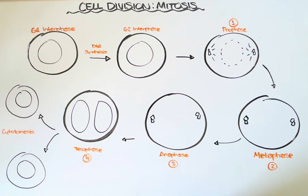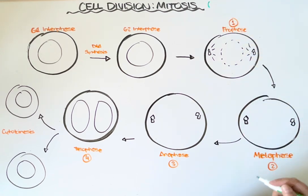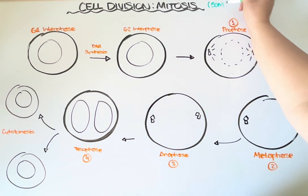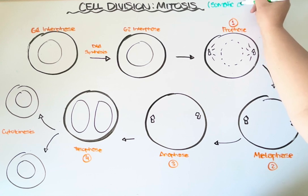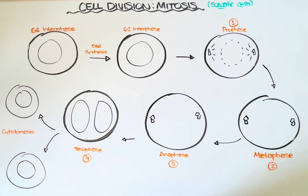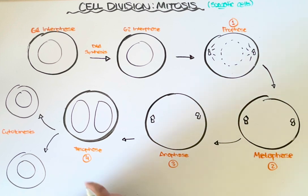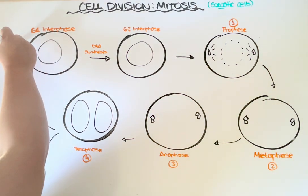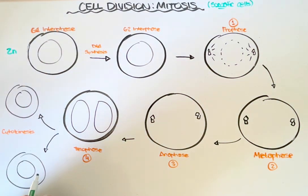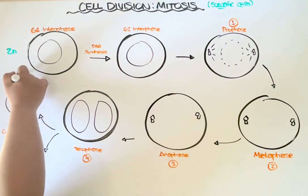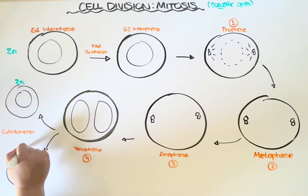Regardless of whether species reproduce sexually or asexually, all organisms use mitosis in order to grow, maintain, and repair their somatic cells. A somatic cell is any cell in your body other than a gamete. So if the goal of mitosis is to take a parent cell, which in humans would be diploid, and divide to produce two identical diploid daughter cells,